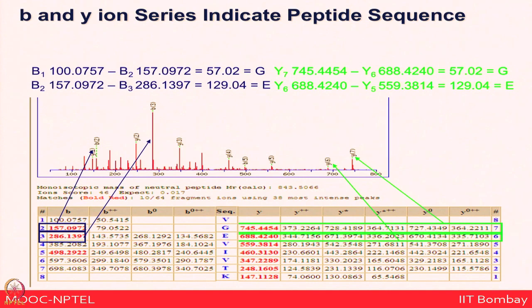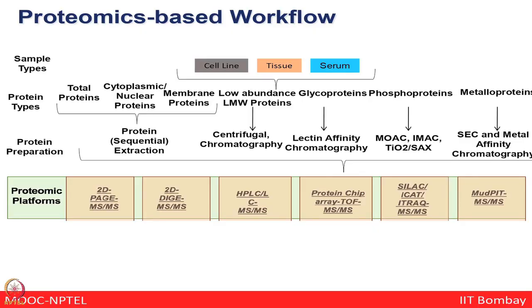Coming to the proteomics-based workflow, you can use a variety of sample types because the technologies are very robust — tissues, serum, cell culture, any kind of biospecimen. After doing good protein preparation, where you need to know your system well to do good protein extraction and separation, you can use various platforms: mass spectrometry-based approaches, 2D-PAGE followed by mass spectrometry, quantitative mass spectrometry, shotgun proteomics, or complementary technologies like microarrays and SPR for different investigations.